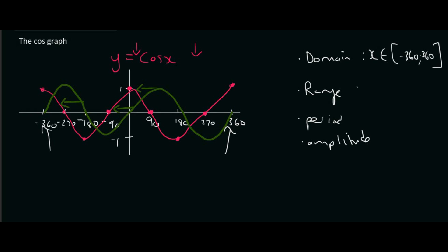The range is the y values and we can see that the lowest y value is minus 1 and the highest y value is 1. So we can just say that y is an element going from minus 1 up to 1.